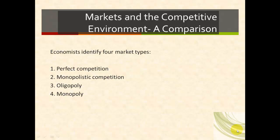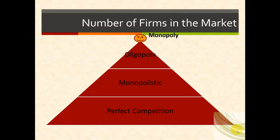Hello everyone. Today's lecture will review and compare the four market structures: perfect competition, monopolistic competition, oligopoly, and monopoly. Here we have a pyramid that depicts how many firms there are in each market structure.